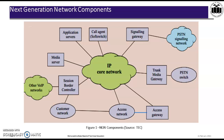The call agent, or soft switches, may also be called the MGC — that is the Media Gateway Controller. It will provide the call logic and call control functions. The Signaling Gateway provides the signaling interface between VoIP networks and the PSTN signals. The Trunk Media Gateway supports functions such as packetization and echo control.